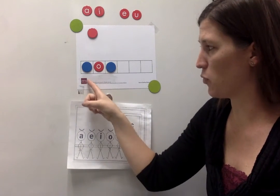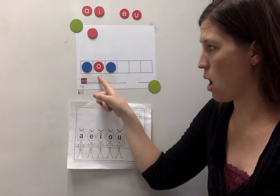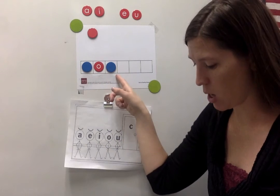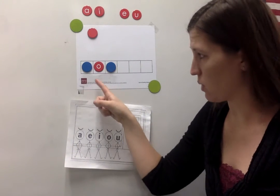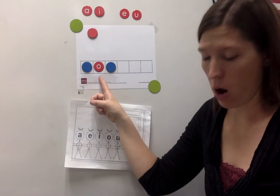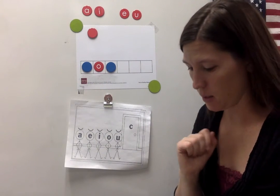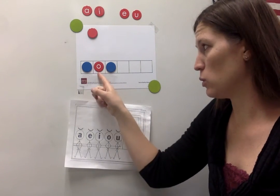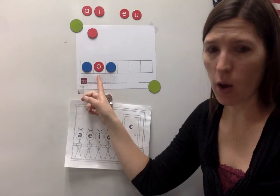Tell me the sounds again for nod. N-O-D. Nod. What's my vowel sound? AH. Is it short? Yes. What color chip do I use for my short O sound? Red.